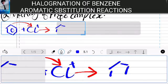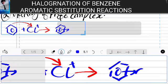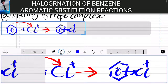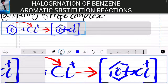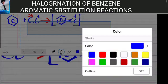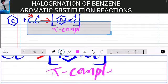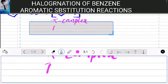We can show it as follows. So pi complex is a transition state. It is termed as pi complex, and it is a transition state.